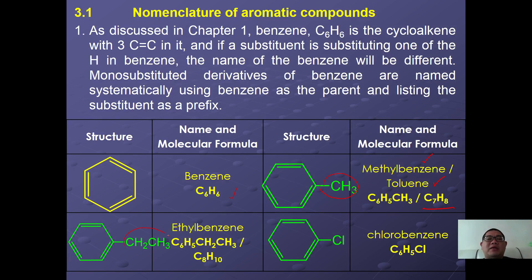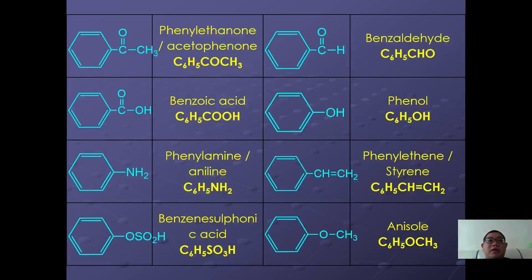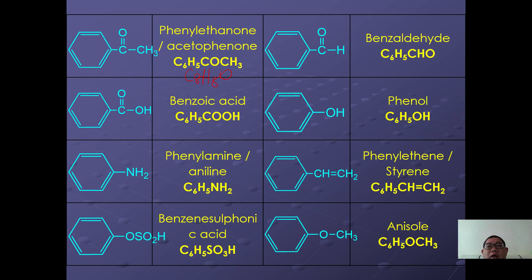Ethylbenzene has an ethyl group substituted on the benzene ring, giving the formula C6H5CH2CH3 or C8H10. If chlorine is the substituent, it becomes chlorobenzene. If a ketone group (COCH3) is substituted on benzene, we call it phenylethanone or simply acetophenone, with the formula C6H5COCH3 or C8H8O. Compounds derived from aromatic aldehydes are known as benzaldehyde, where the aldehyde acts as the functional group, with the formula C6H5CHO or C7H6O.